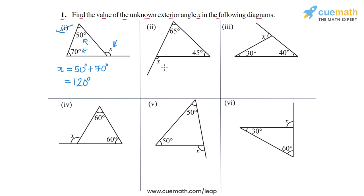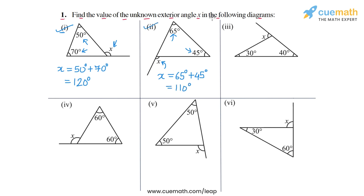In part two, x is this exterior angle and the opposite interior angles are 65 degrees and 45 degrees. So x will be equal to 65 degrees plus 45 degrees — the sum of the opposite interior angles — and this will be equal to 110 degrees. So this is the answer for part two.